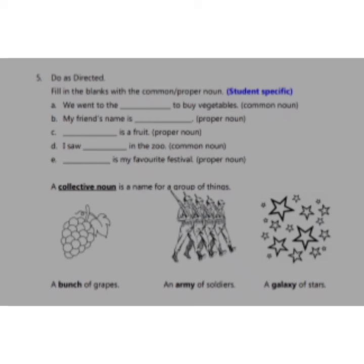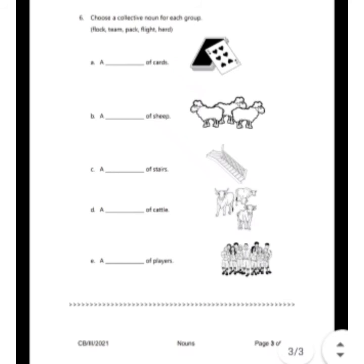Now, let's go on to the next question. Now, exercise 6. Choose a collective noun for each group. There are 5 words given in the bracket so you're going to fill up the blanks.